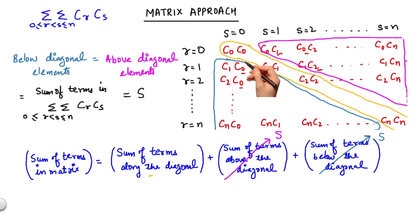As you can see, the terms are C0 square, C1 square, C2 square, and so on until Cn square. So I can very conveniently write this as summation of CR square, R varying from 0 to n.